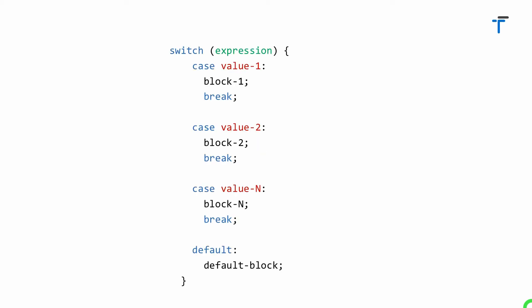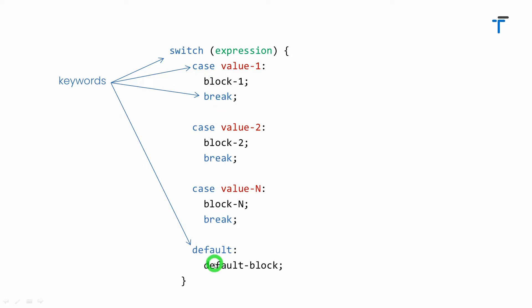Switch case is the multi-way decision-making statement. That is, it allows you to select one option out of several available options. This is what the syntax of switch case looks like. Now try to understand each and every part of the syntax. In this syntax, the switch, case, break, and default are the keywords in Dart.